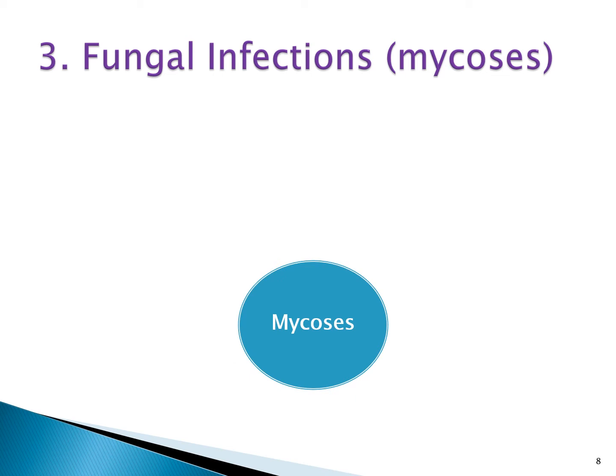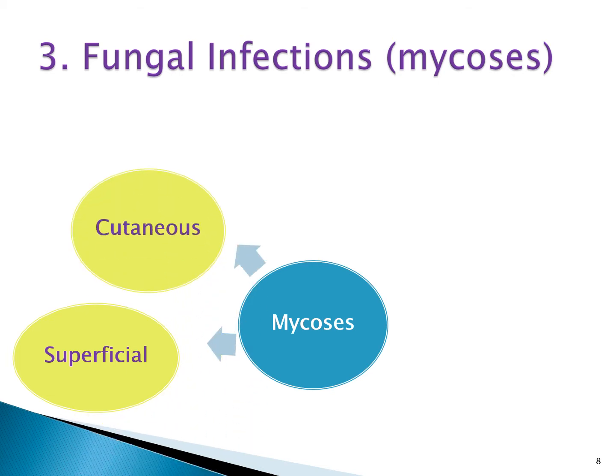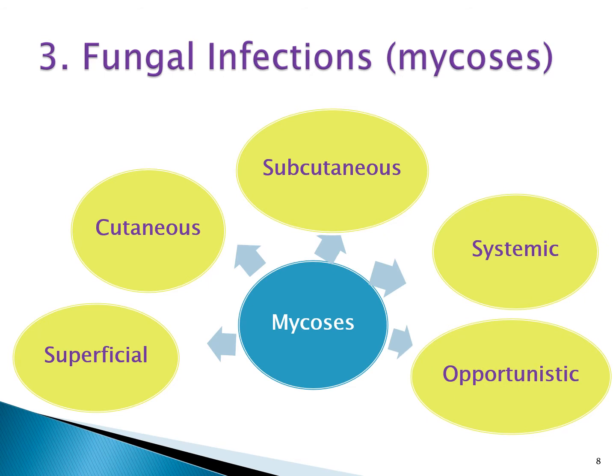We have three categories of fungal diseases: fungal allergy, fungal poisoning, and fungal infections. The fungal infections category is called mycosis. Mycosis is classified clinically according to the site of infection into superficial, cutaneous, subcutaneous, systemic, or opportunistic mycosis.